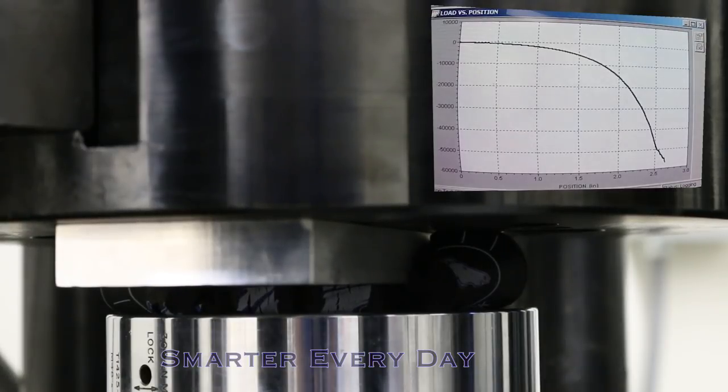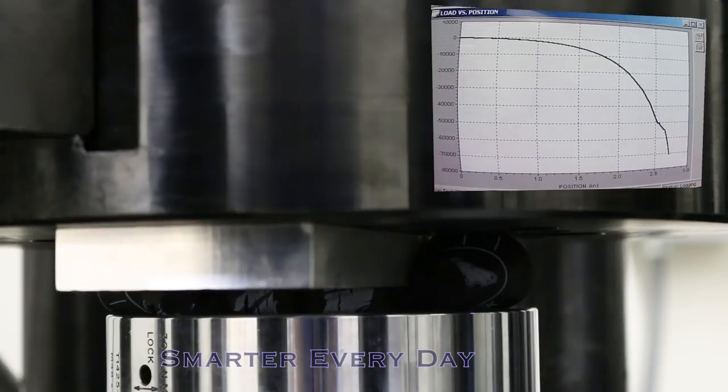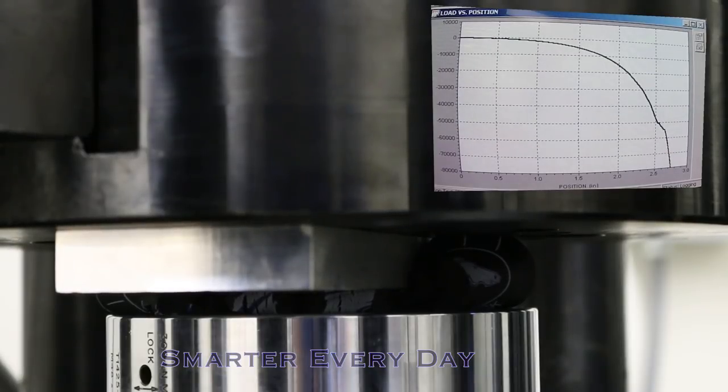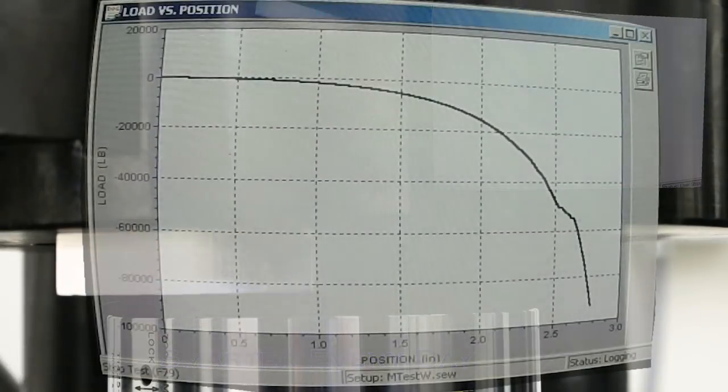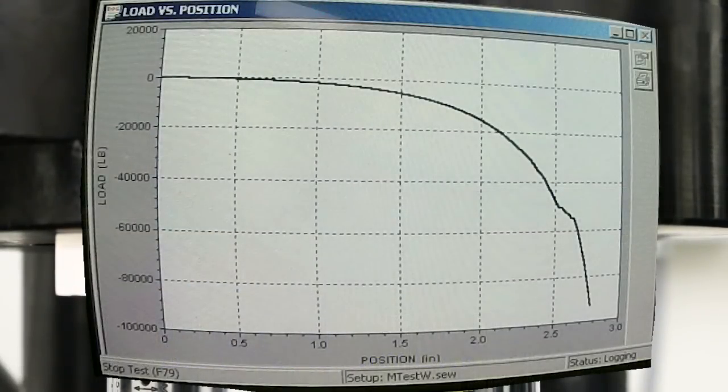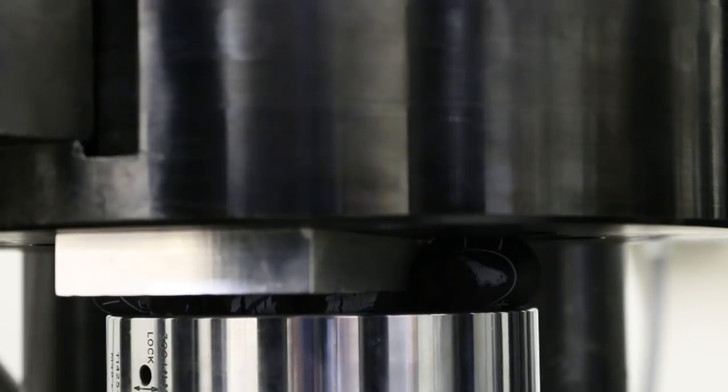60,000 pounds. All right, I had to stop it at 83 because it was beginning to ramp towards 100,000, which is the max of the machine, so I didn't want it to trip any breakers. So that's 80,000 pounds on a hockey puck. Can we back it back up and see what it does? Yep.